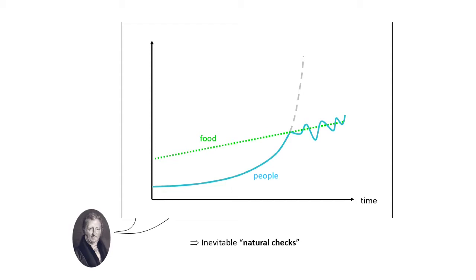They might be positive checks — that's what he called them — like war or famine. Or they might be negative checks, like religion or abstinence — that's avoiding making babies. So this is how Malthus saw things.